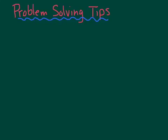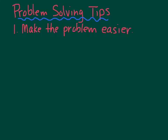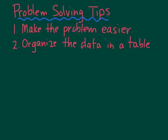Before we get started, let's think about some ways to tackle this problem. One strategy is to make the problem easier. Instead of trying to find all possible arrangements for six horses and six stalls, let's start with a fewer number. Next, we should organize the data in a table, which will help us with our third strategy: looking for patterns.